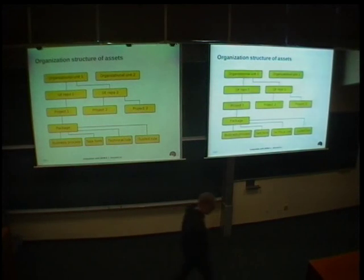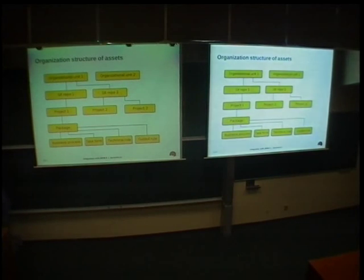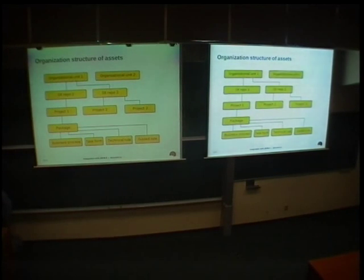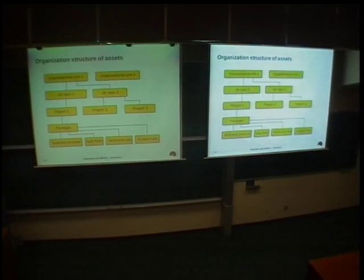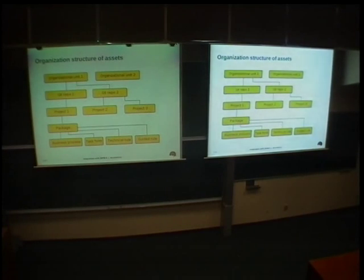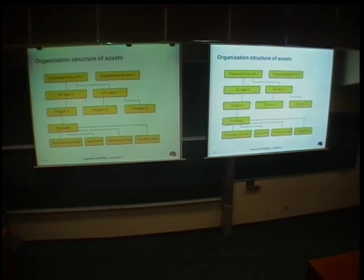One of the major changes in JBPM 6 is the change in organization of assets and asset repository. In JBPM 5 we had just one JCR repository and we could only structure it into packages — all the assets, business processes, rules and so on — and we used a Guvnor web application for that. Now there are multiple choices in defining structure. We now have organizational units.